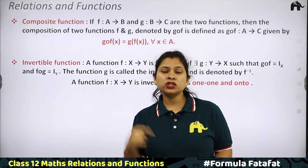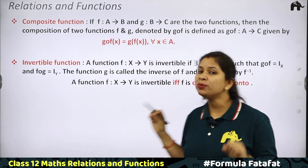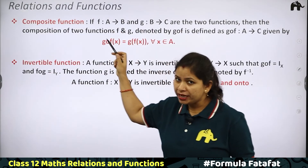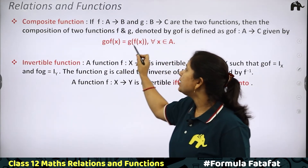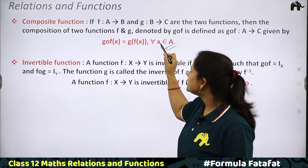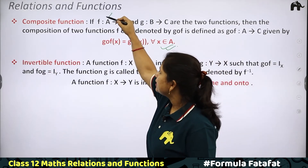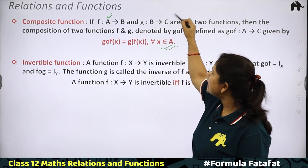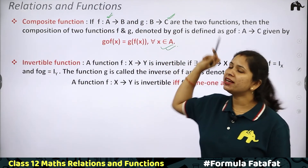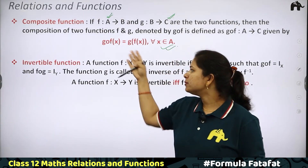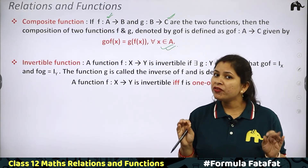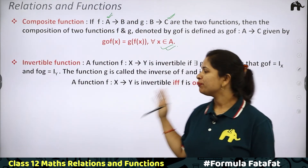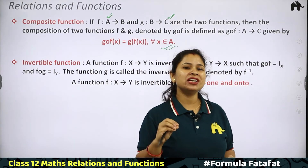What does composite function mean? It is just a definition, because this topic has been removed from the syllabus, so we don't go into detail. Composite function means: if f maps A to B and g maps B to C, then g of f means g(f(x)) for all x belonging to A. The domain of this composite function is A, and the co-domain is C. For invertible function, the basic concept is that any function is invertible when it is both one-one and onto. We don't go into further detail as it's not required.